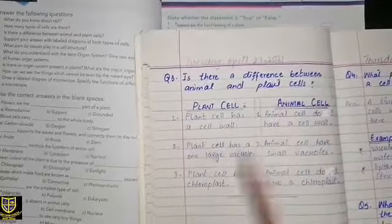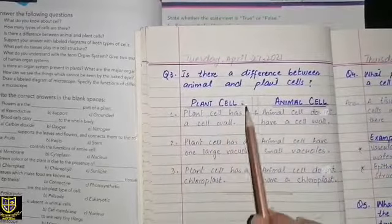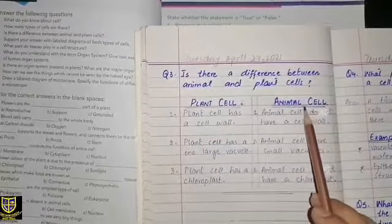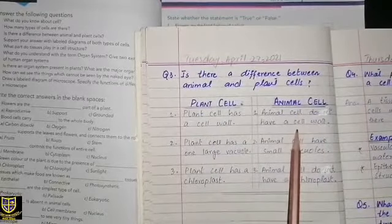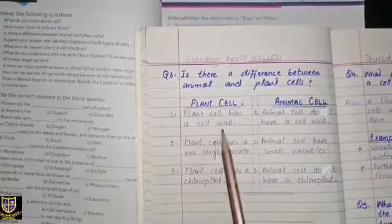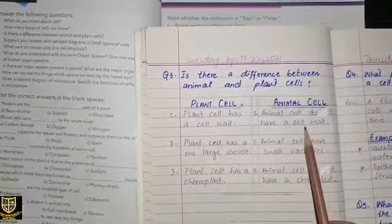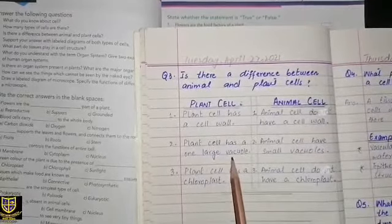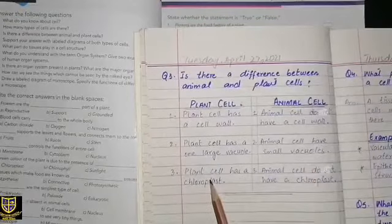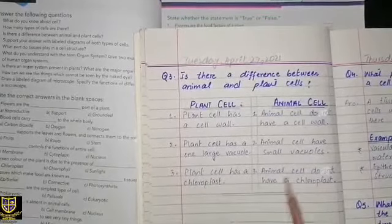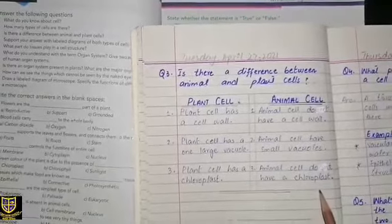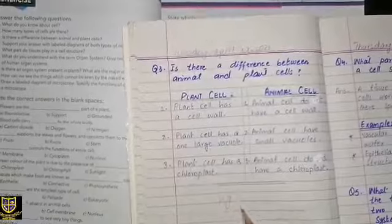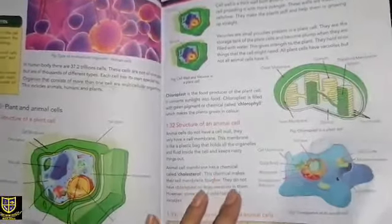Is there a difference between animal and plant cell? Let's look at the differences. Draw a center line — plant cell on one side, animal cell on the other. Plant cell has a cell wall; animal cell does not. Plant cell has one large vacuole; animal cell has small vacuoles. Plant cell has chloroplast; animal cell does not have chloroplast. Draw the diagram from page number 5.